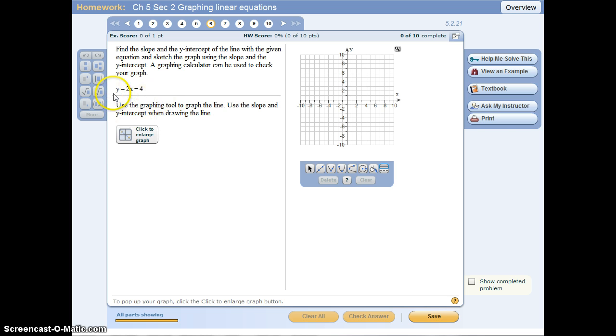To graph this line, first we have to know what they're asking us for. They're asking us to use the slope and the y-intercept. Looking at my equation, I see the slope is 2 over 1 and the y-intercept is negative 4, or 0, negative 4 if you write it as a point.